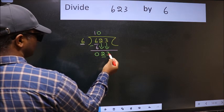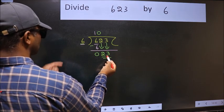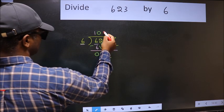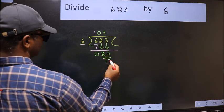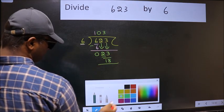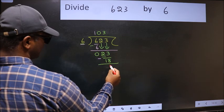Now 23. A number close to 23 in 6 table is 6 times 3 is 18. Now we should subtract. We get 5.